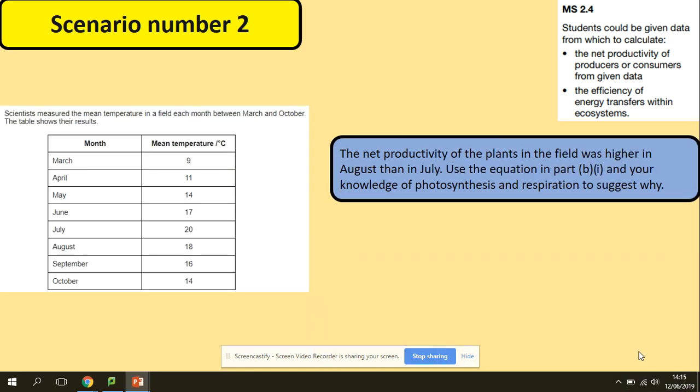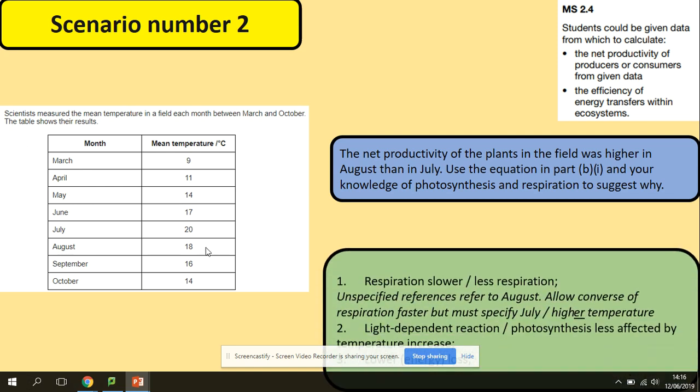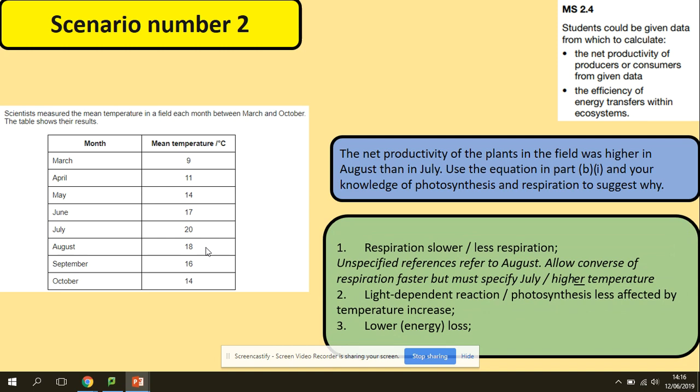Another question here, we've got the month, we've got the temperature, and the question is asking you and telling you that the net productivity of plants in the field was higher in August than in July. But use the equation in part B and your knowledge of photosynthesis and respiration to suggest why. When we've got August and we've got July, what we need to think about here is the respiration and photosynthesis.